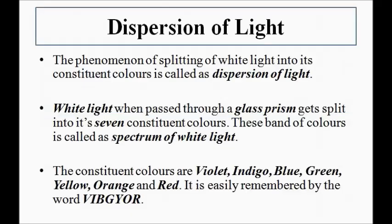Dispersion of light is the phenomena of splitting of white light into its constituent colors. White light is composed of several constituent colors determined by their wavelengths. Those colors are of seven types: violet, indigo, blue, green, yellow, orange, and red.